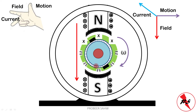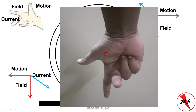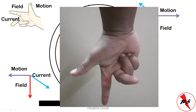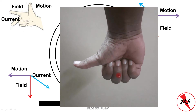Now consider the armature conductor directly under the south pole. The field is again directed downwards. Since the armature is rotating clockwise, the instantaneous direction of motion for this conductor is toward the left. By Fleming's right-hand rule, the direction of the current in this conductor will be coming out of the screen.